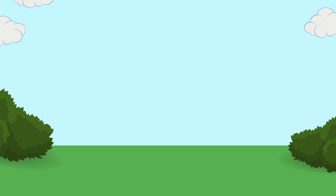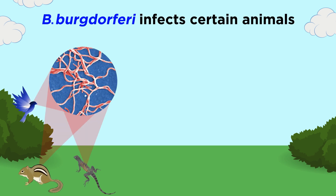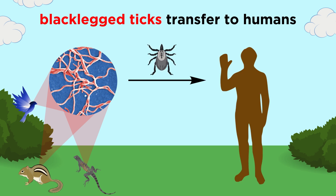Here's where it gets extra tricky, so pay close attention. Borrelia burgdorferi infects a wide range of small mammals, birds, and lizards. Ticks, particularly black-legged ticks, transfer B. burgdorferi from these vertebrate animals to humans. This is the only documented way for humans to get infected by B. burgdorferi.